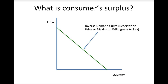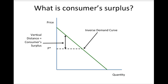With an inverse demand curve, price is on the vertical axis and quantity is on the horizontal axis. If the price of a good is higher than a consumer's reservation price, they won't buy the product. If the price is less than the reservation price, the consumer will buy the product and will feel happy because they didn't have to spend as much as they were willing to. So one way to think about consumer surplus is that it's a way to assign a dollar value to that happy feeling we get when we feel like we get a good deal on something.